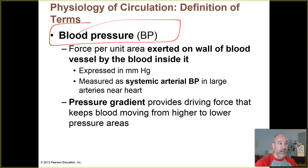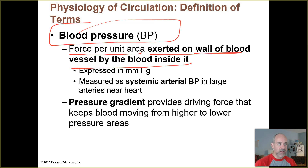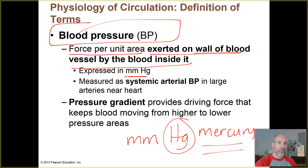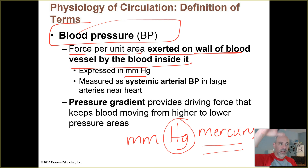Blood pressure literally means it's the amount of force per unit of area that's being exerted on the wall of the blood vessel by the blood inside it. When we measure it, it's given in millimeters of mercury — mmHg. That's the conventional method for measuring pressures, because older pressure gauges used mercury: pressure made mercury move up a gauge, and how far it moved was measured in millimeters.